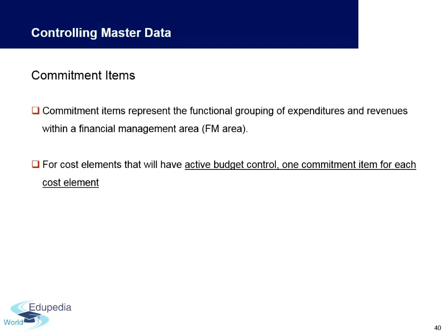Commitment items represent the functional grouping of expenditures and revenues within a financial management area. We will be looking into all these items — cost centers, profit centers, cost element types, and commitment items — in the next couple of videos covering the CO module in more detail.